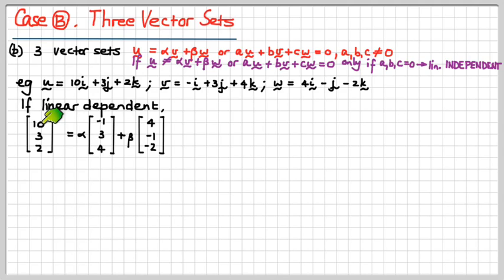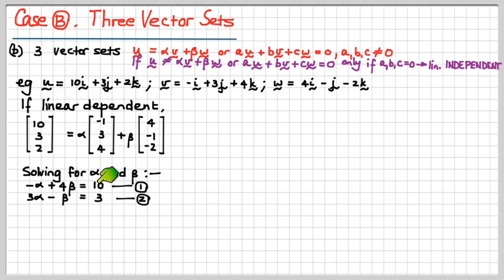I'm saying that u, which is 10i plus 3j plus 2k, is going to be equal to alpha times v, which is minus i plus 3j plus 4k, plus beta times w, which is 4i minus j minus 2k. Now what we've got to do, you'll notice something very intriguing, is we're going to solve this for alpha and beta. But the problem we've got here, I'll just write out the equations. This one here is for the i's, this one here is for the j's, and that third one is for the k's.